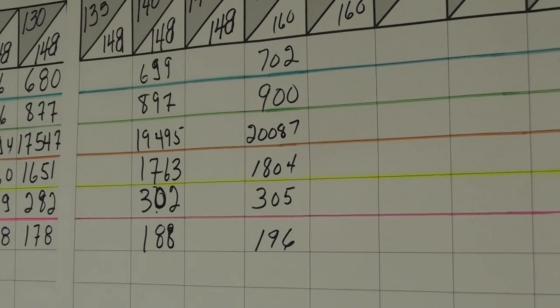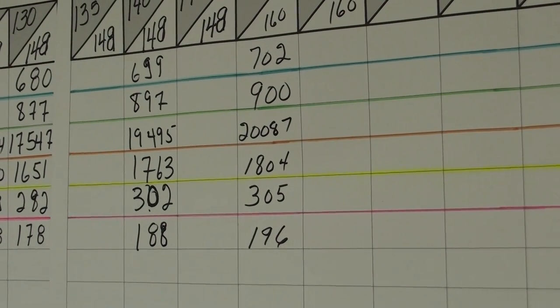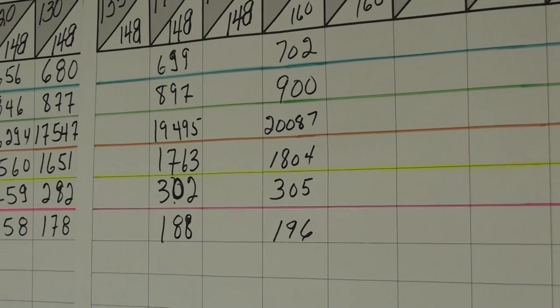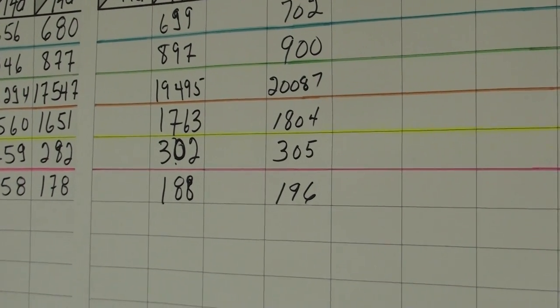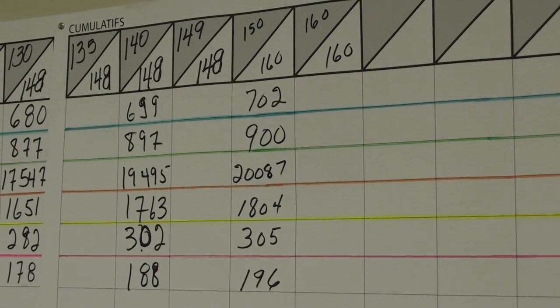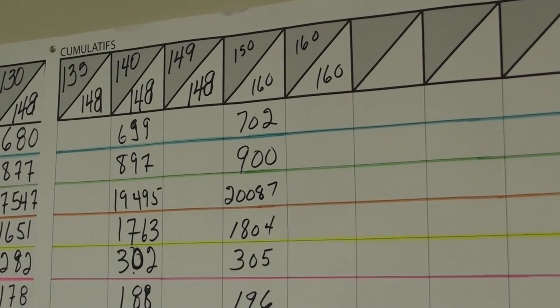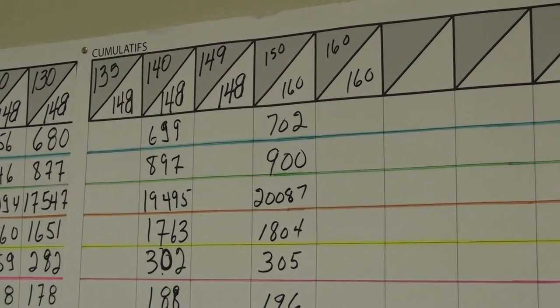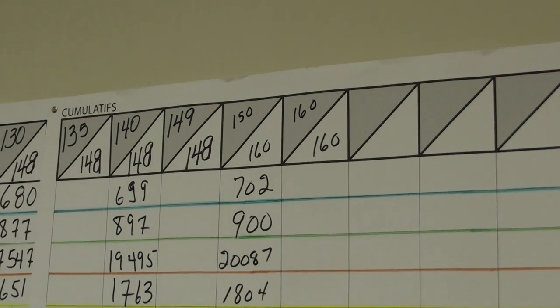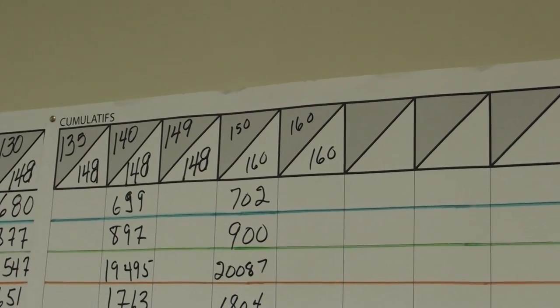The Coalition Avenir Québec has gained 1,804 votes. After that, there is Lawrence Bergman, Liberal, who has gained as always with 20,087 votes. The Quebec Solidaire has gained 900, more than the Parti Québécois who has gained 702 votes. It's almost complete.